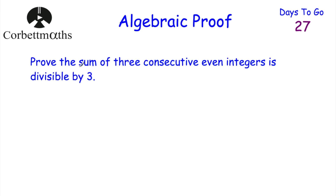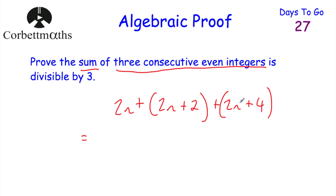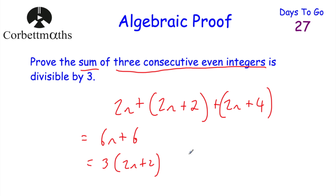Here's a question for you to try: Prove the sum of three consecutive even integers is divisible by 3. Pause this video and try it yourself. So the first even integer is 2n. The next, 2n+1, would be odd, so 2n+2 is our next even integer. Then 2n+3 is odd, so 2n+4 is the next one. Adding them up: 2n + 2n + 2n is 6n, and 0 + 2 + 4 is 6, giving us 6n + 6. Factorizing to show divisibility by 3: 3(2n+2). Because it's 3 multiplied by something, therefore it's divisible by 3.